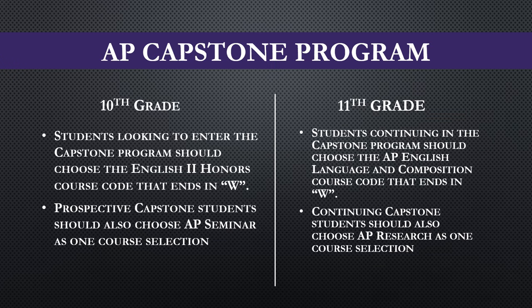The AP Capstone program begins in 10th grade year, so our current 9th graders interested in entering this program — which is our most challenging diploma track — would sign up for English 2 Honors with a course code that ends with a W. Then you're going to choose the AP Seminar course to go along with that English class. Those classes, unlike our block classes, are paired together and run all year on an A day, B day schedule, but will get you two credits at the end of the year.